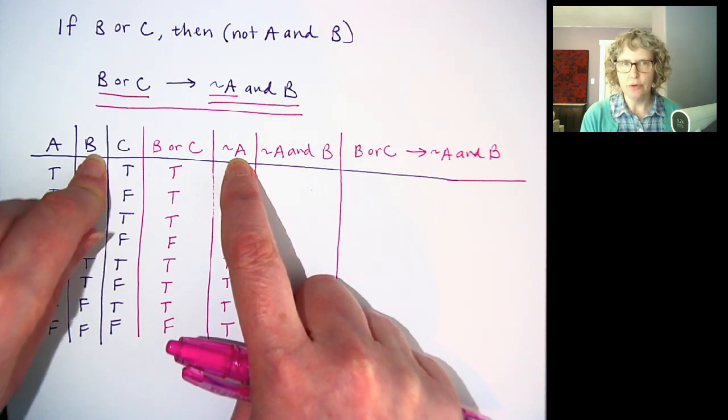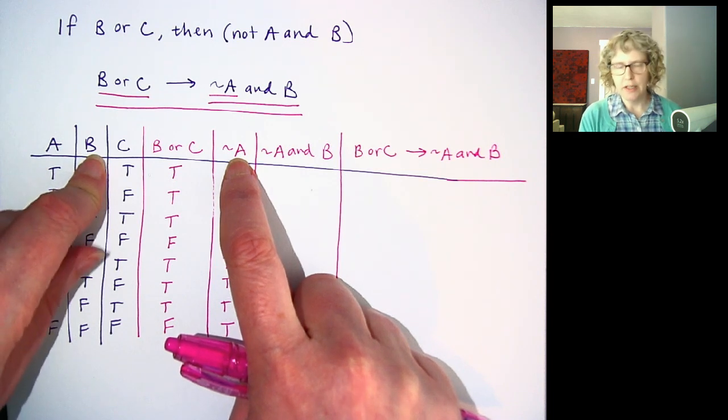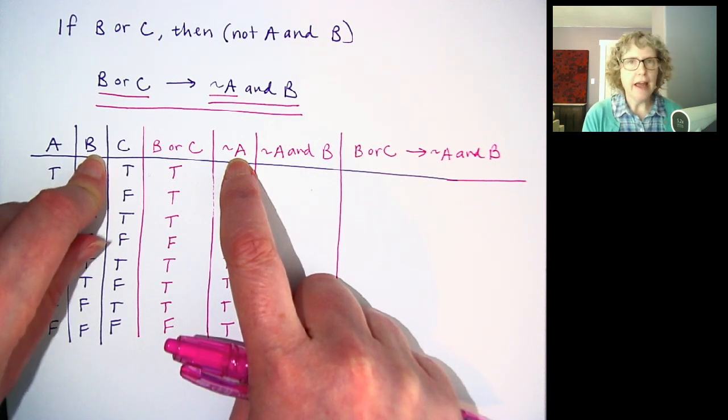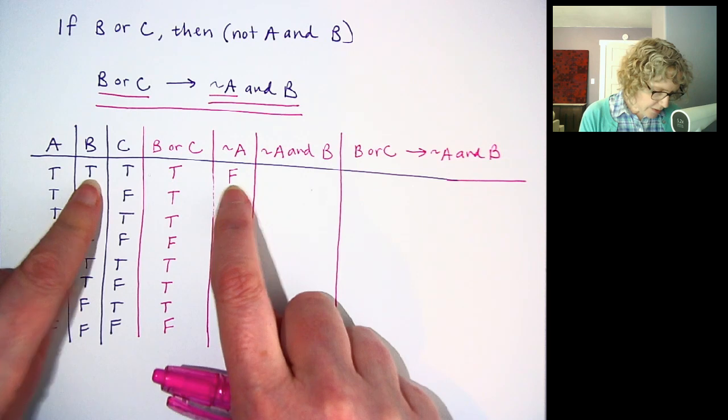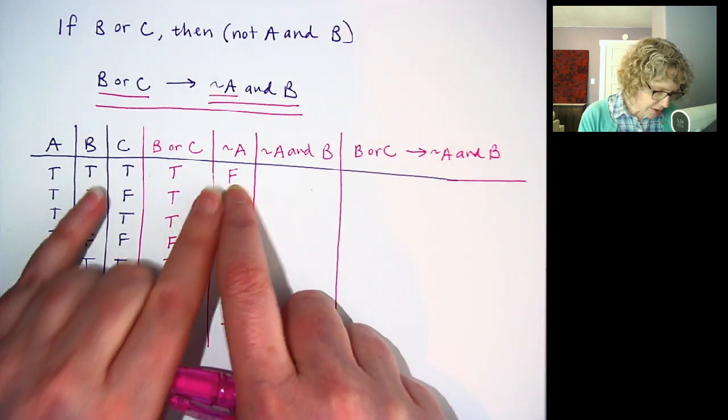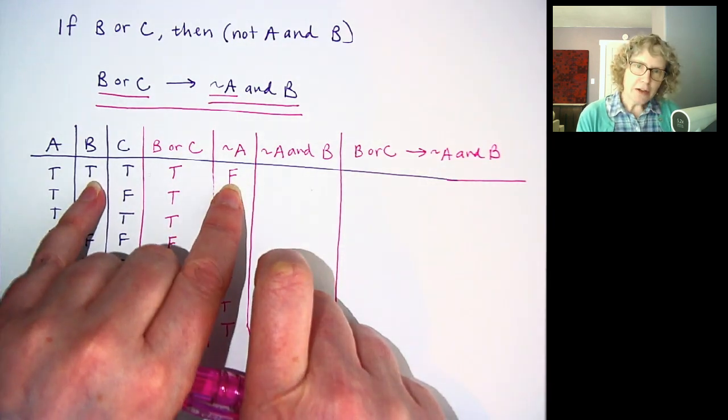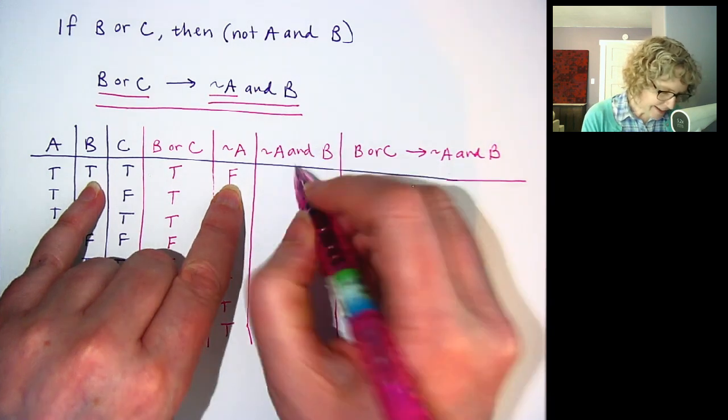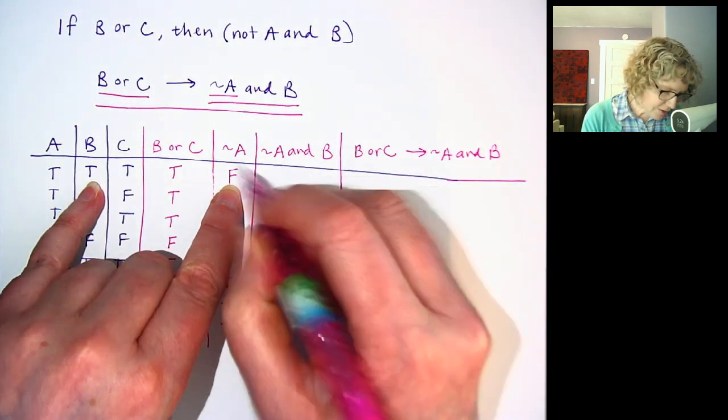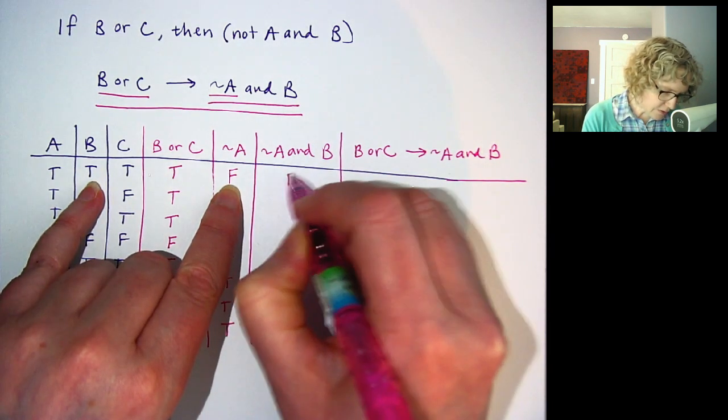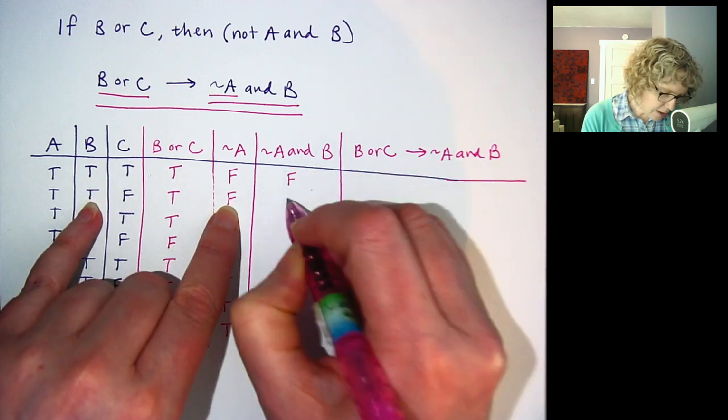And I'm going to think, what does and do? And means they both have to be true. You have to be wearing jeans and the hat. So both have to be true. So I'm going to try to get my fingers here. Use your fingers. They're not both true. So that's false.